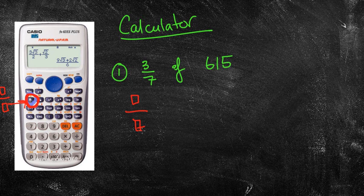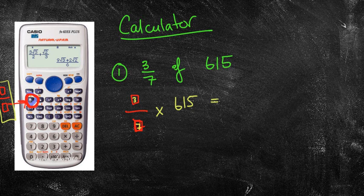So for example, if we're looking at this question, I can press that button first, and once I press that, we can then enter in the numbers 3 and then 7. You can even press the 3 first, and then press your fraction button, and it'll put it straight into the fraction. Now of means times, and then we've got 615. So we're simply just pushing our fraction button, putting in 3 over 7, and then saying times 615, and then pressing equals.